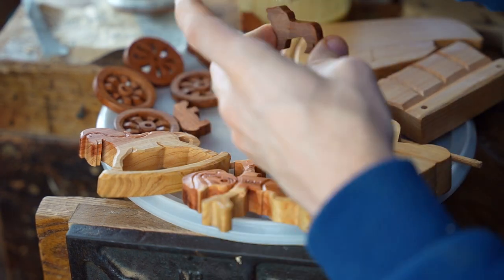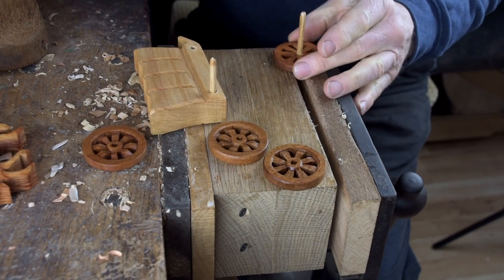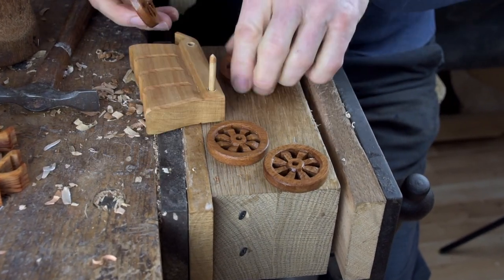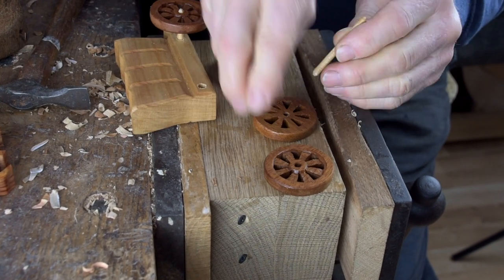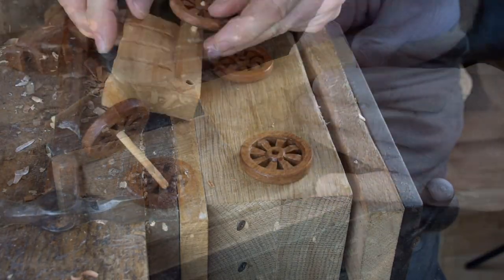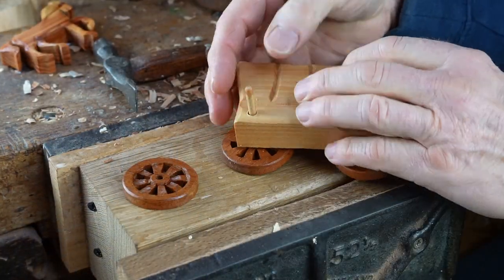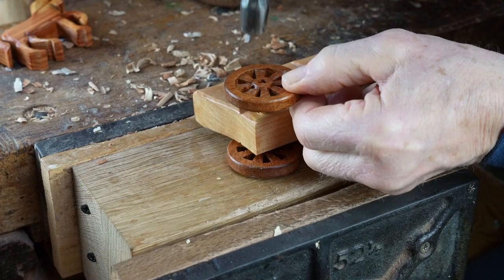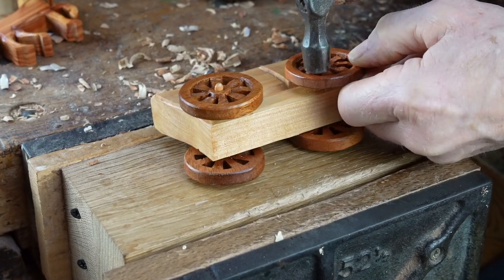After that the final part of making these toys is to actually add our wagon wheels to our wagons. So we just tap them on with either a mallet or a hammer. Remember the hole we've drilled for the wagon is slightly wider which will allow the wheels to run nice and smoothly. A smaller hole for the wagon wheels so they are a bit tighter.